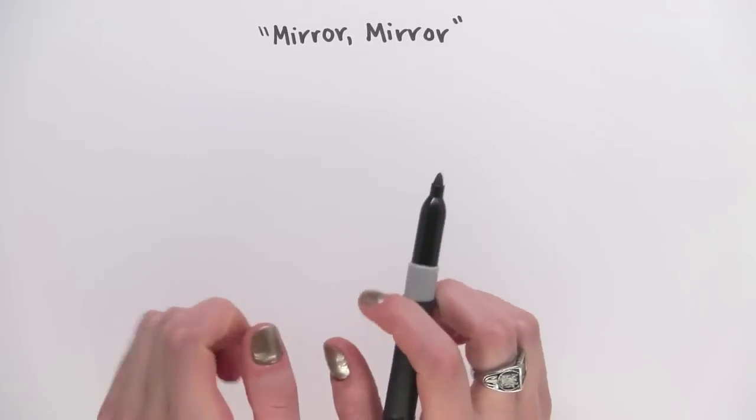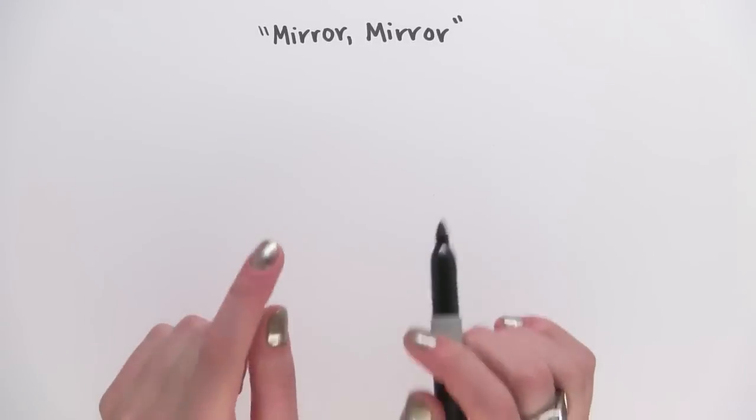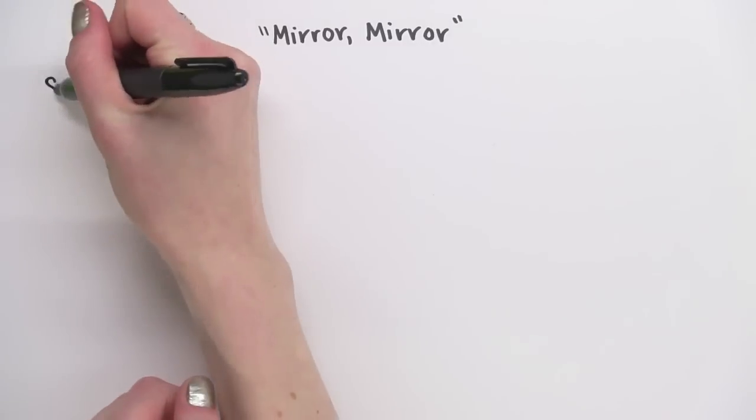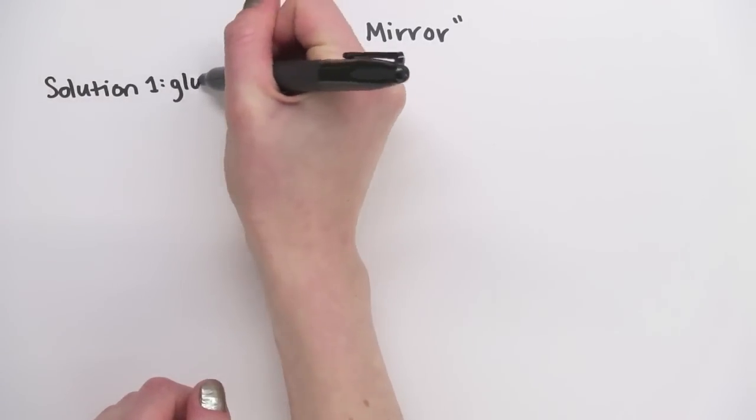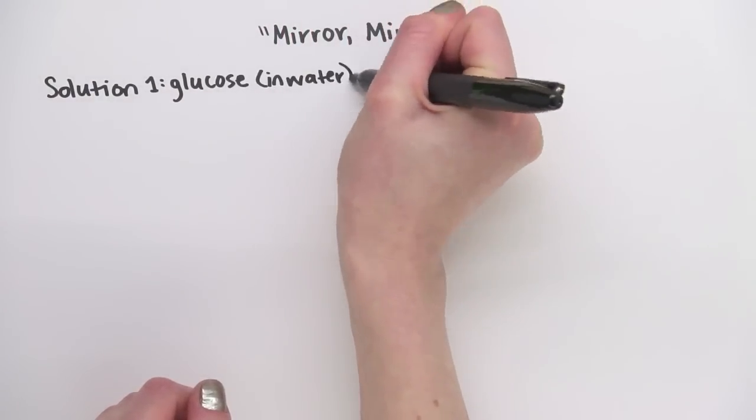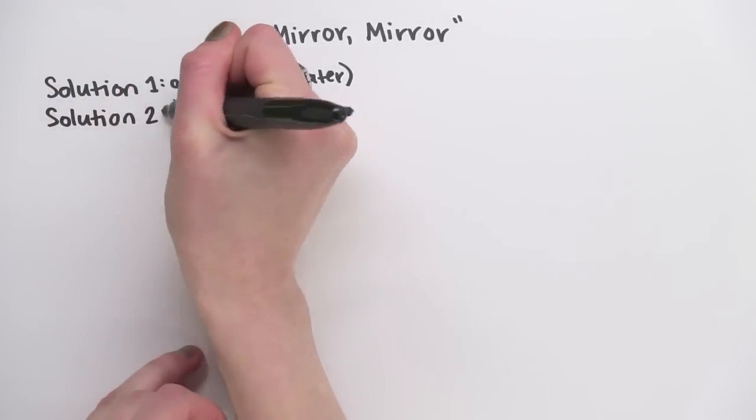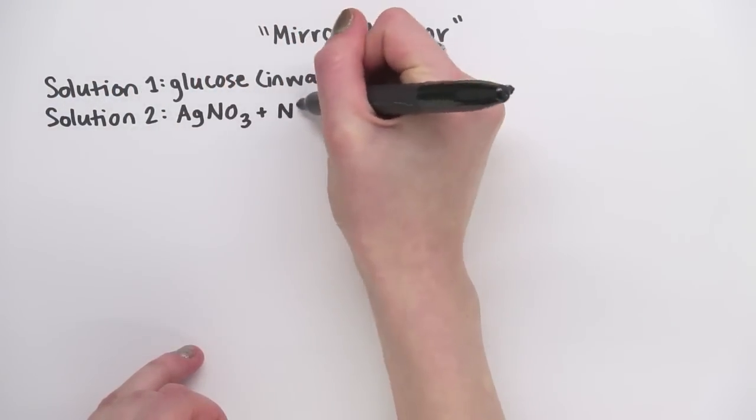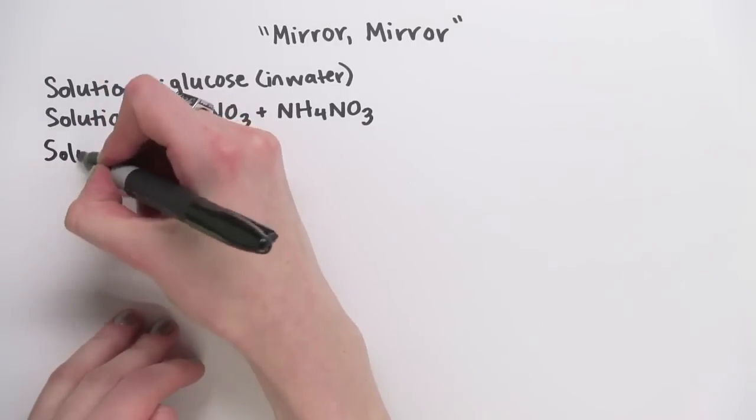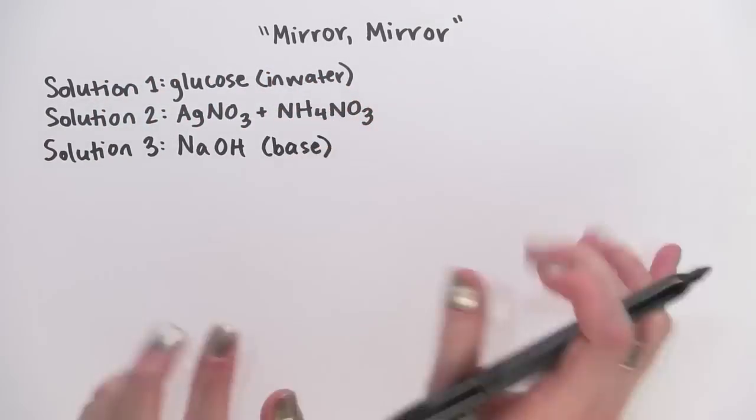So what did Dr. Dolan do? Well, he added three solutions to the flask. Solution one was glucose in water. Solution two was a mixture of silver nitrate and ammonium nitrate. And solution three was sodium hydroxide, which is a base.